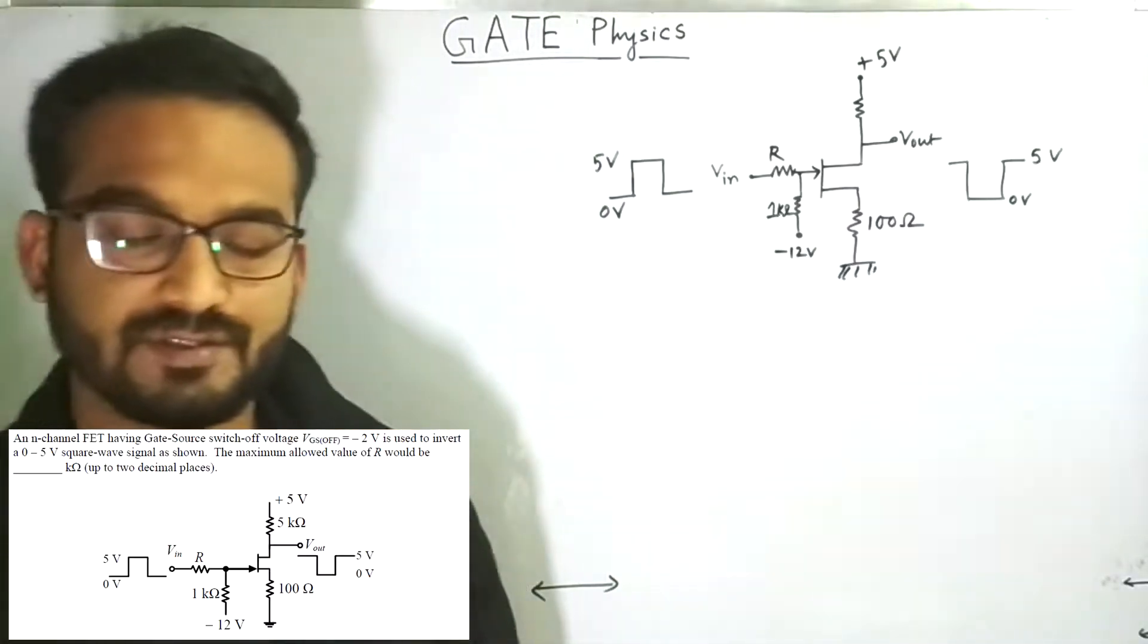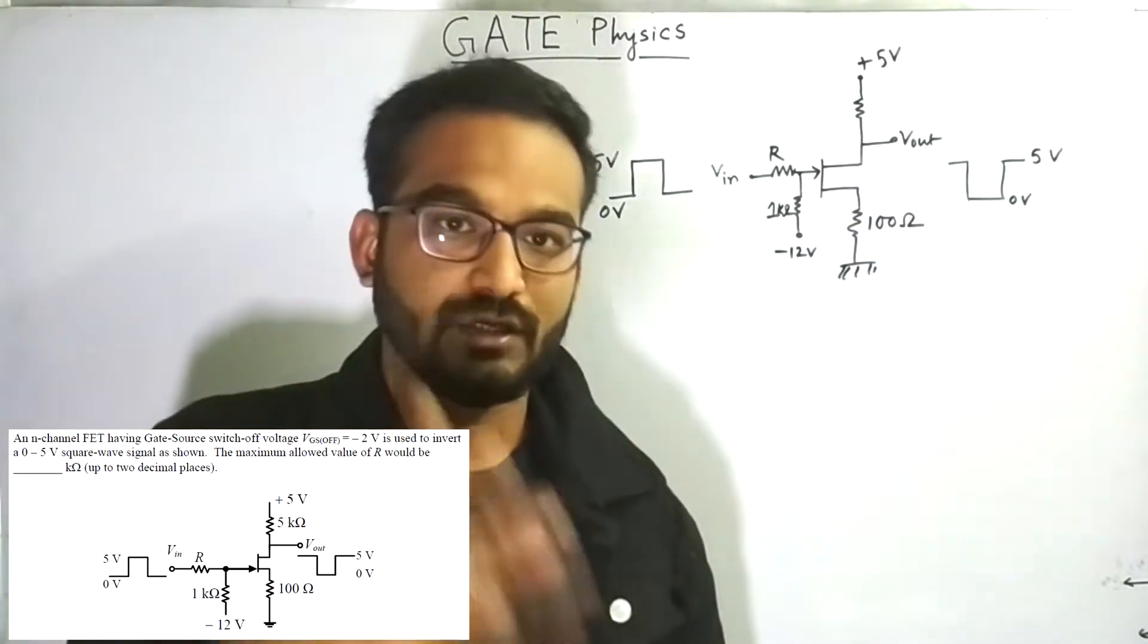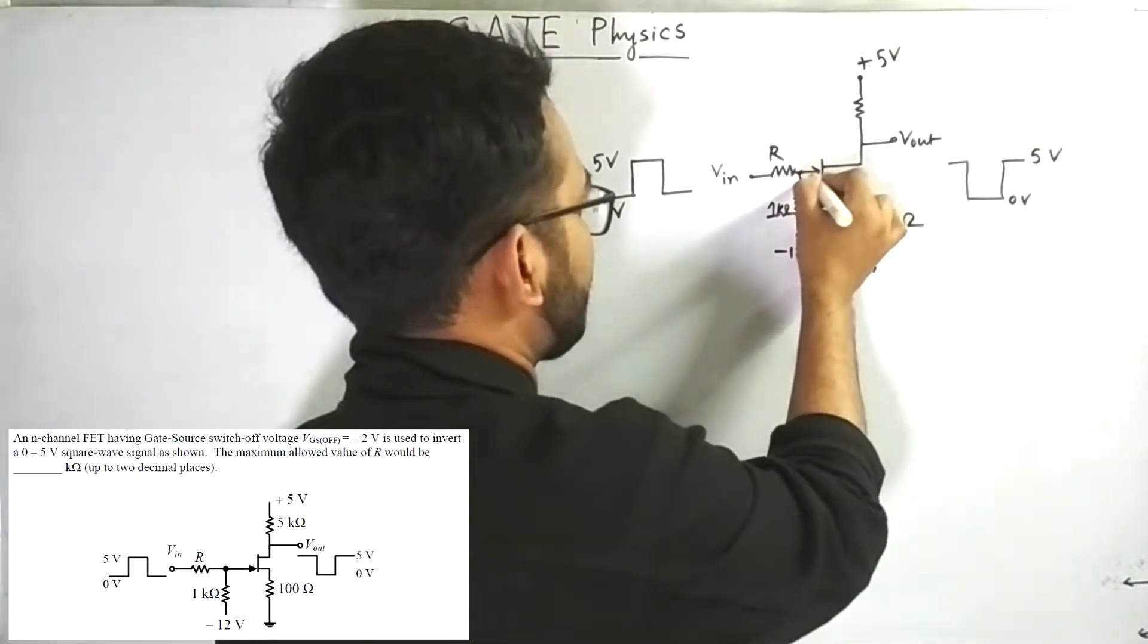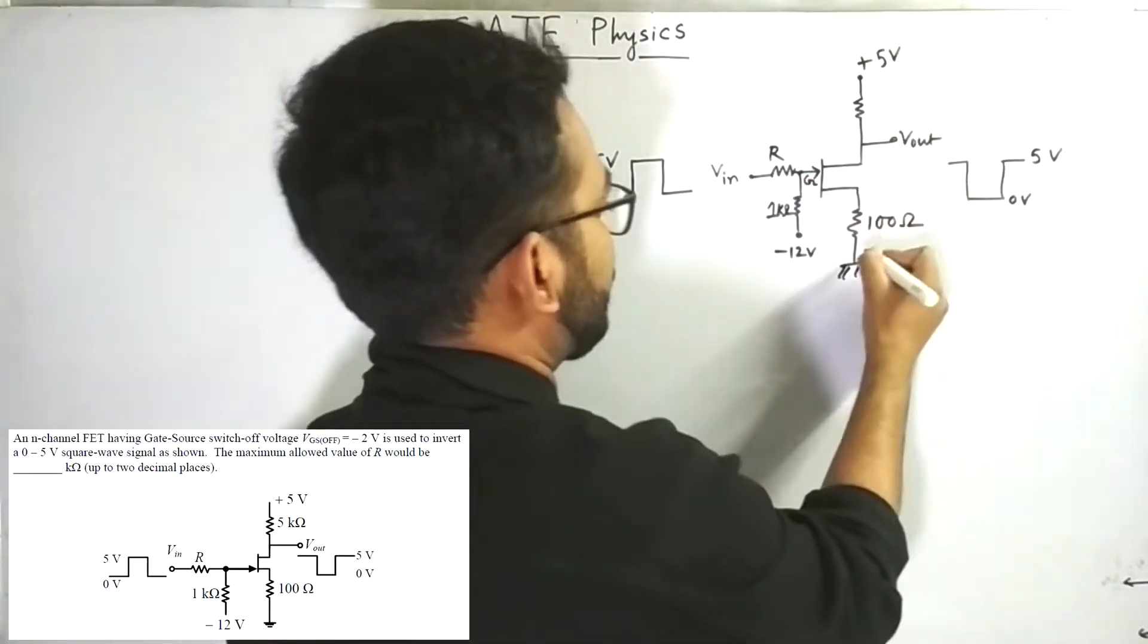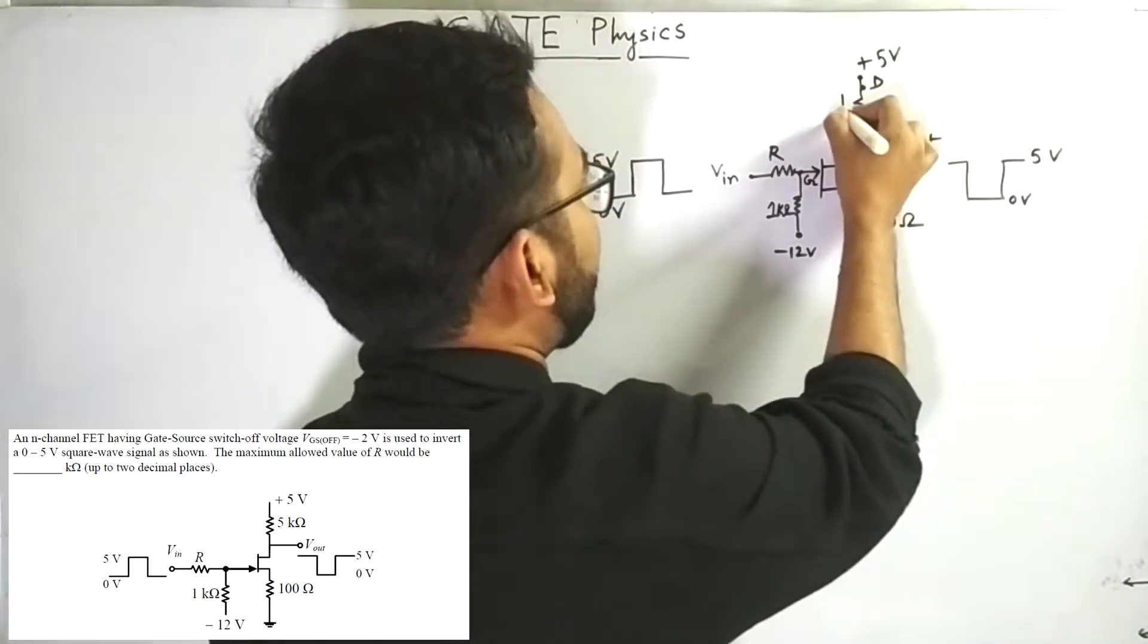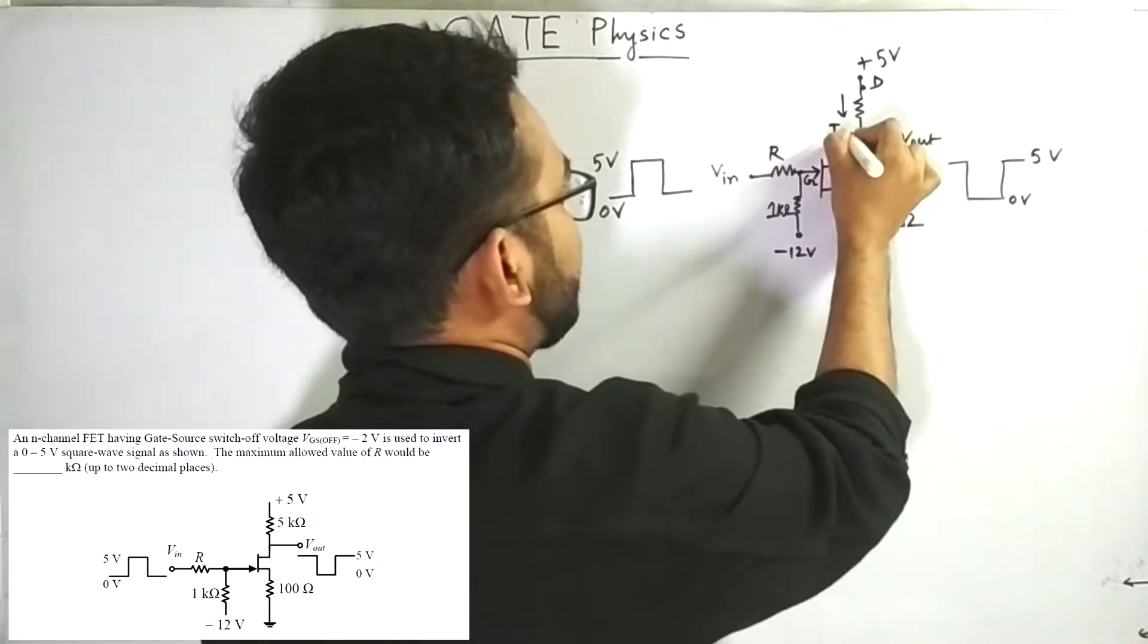This is basically a FET. Now as you know, FET is consisting of gate, source, and drain. So this is the gate part, we are adding G. This is source and this is drain. And current ID is flowing through this resistance.